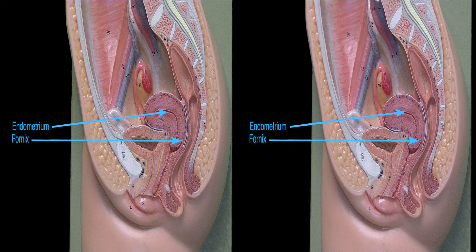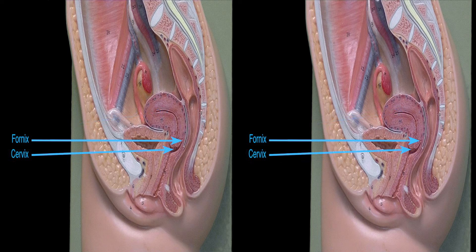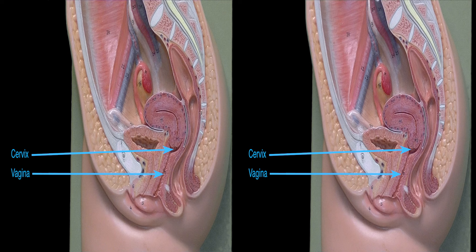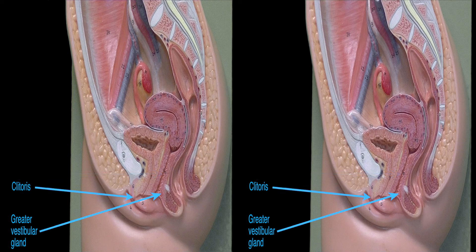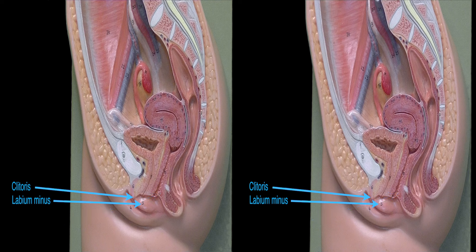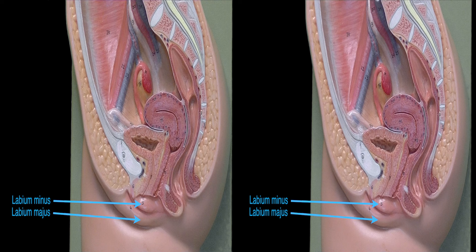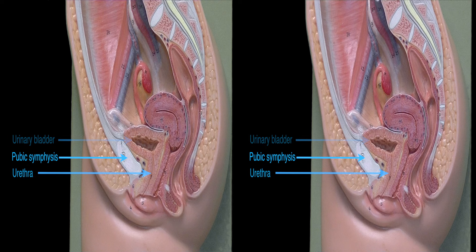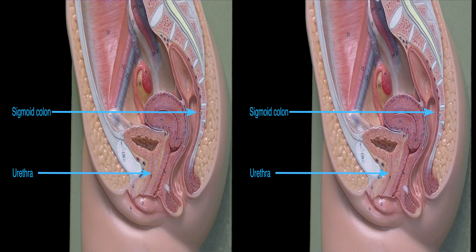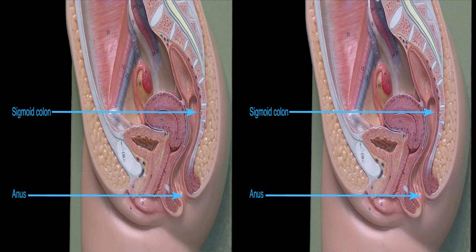Endometrium. Fornix. Cervix. Vagina. Greater Vestibular Gland, Clitoris. Labium Minus. Labia Majora. Urinary Bladder. Pubic Symphysis. Urethra. Sigmoid Colon. Anus.